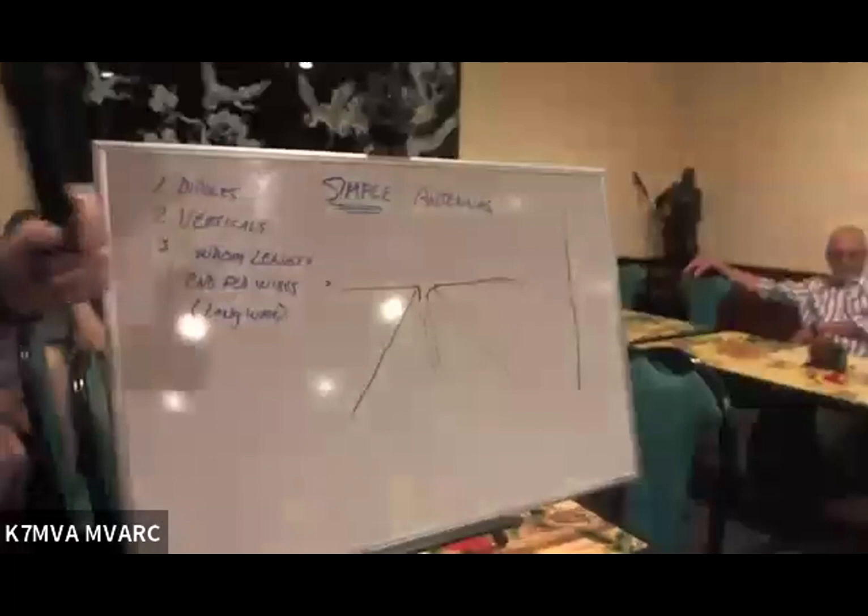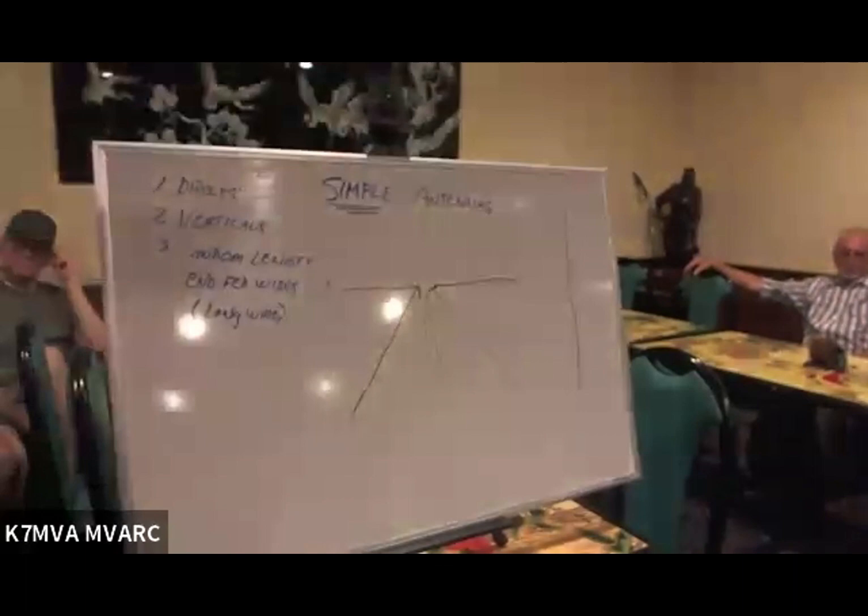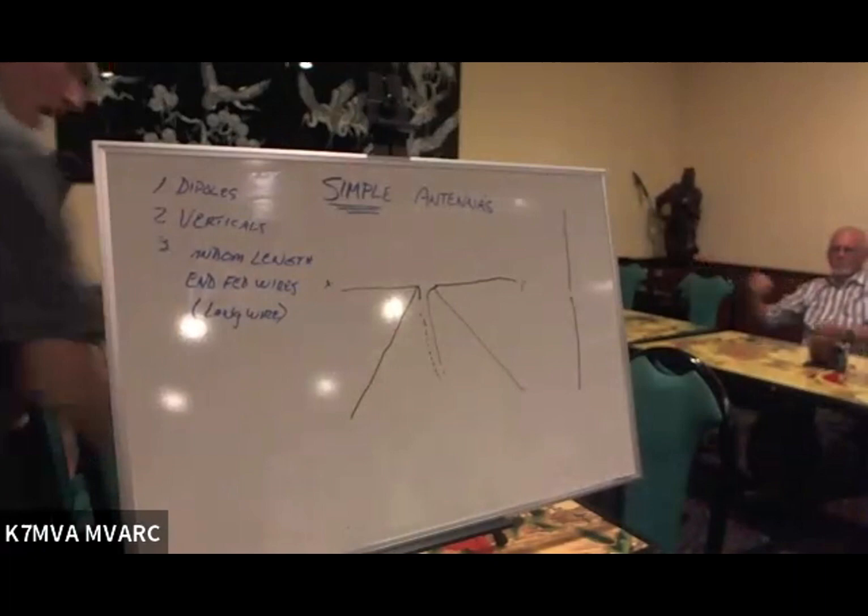Vertical. You can make a half wave and you can actually put it up vertical. Bad thing about that is the feed line, this feed line in the center, ideally you would want it to come out at 90 degrees to it. Not too many people do that.